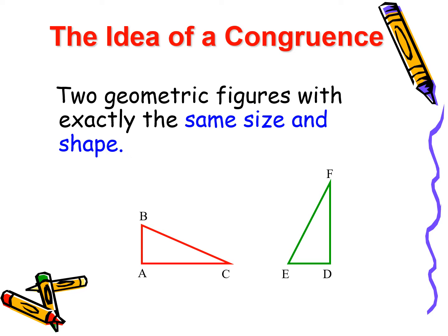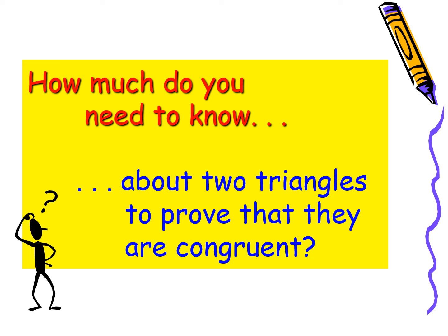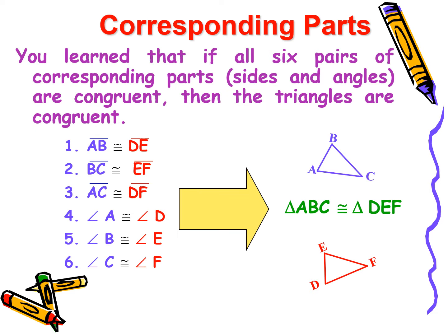The idea of congruence: two geometric figures with exactly the same size and shape. How much do you need to know about two triangles to prove that they are congruent? You learned in the past that if all six pairs of corresponding parts — sides and angles — are congruent, then the triangles are congruent.